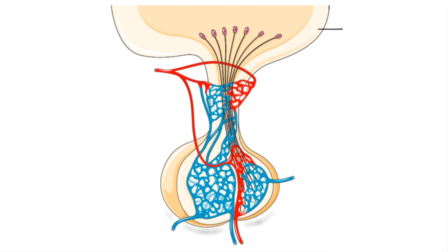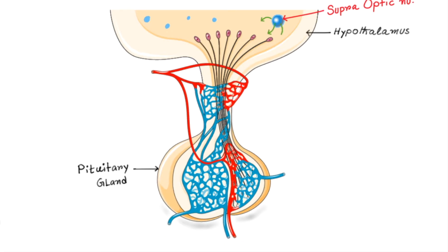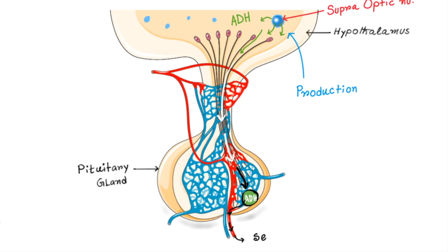Let's see where the ADH comes from. This is hypothalamus and just beneath the hypothalamus there is pituitary gland. There are lots of nucleus present in the hypothalamus. One such important nucleus is supraoptic nucleus. This nucleus synthesizes ADH which comes down to the pituitary gland. ADH synthesizes in hypothalamus and secretes from the posterior pituitary. So posterior pituitary doesn't produce ADH — it is just like a storehouse from where ADH secretes into the general circulation.